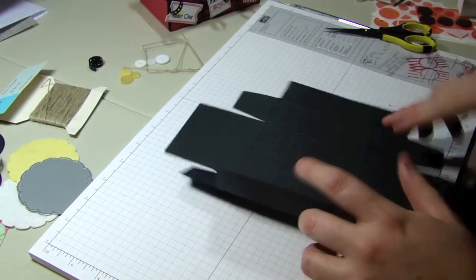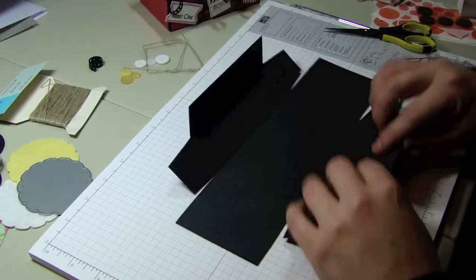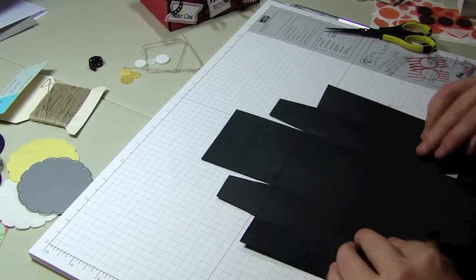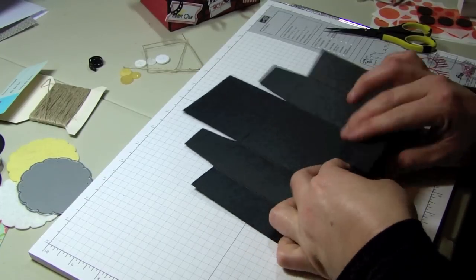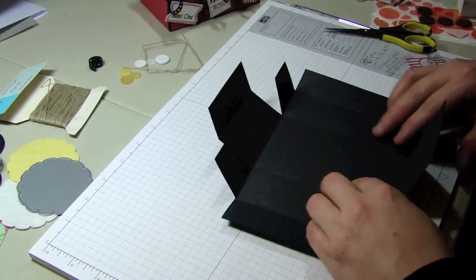Now that we have that all done, I'm going to fold along every score line to kind of put the box in shape. It's easier if you do this before you add your adhesive.